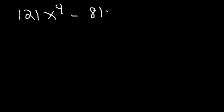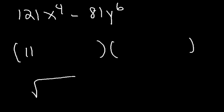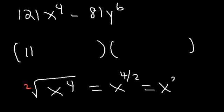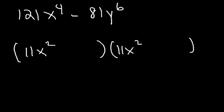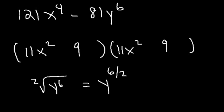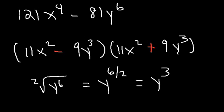Now what about 121x⁴ minus 81y⁶? The square root of 121 is 11, since 11 times 11 is 121. The square root of x⁴ is x² — simply divide the exponent 4 by 2. So the square root of 121x⁴ is 11x². The square root of 81 is 9, and the square root of y⁶ is y³ (divide 6 by 2). So this is 9y³. The answer is (11x² minus 9y³)(11x² plus 9y³).